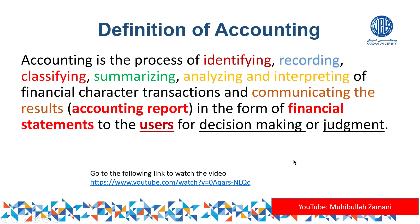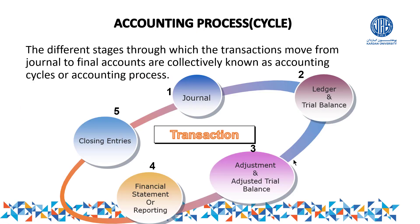So the steps are: identify, record, classify, summarize, analyze and interpret, and communicate to users for decision-making. We do this through the accounting cycle: journal, ledger, trial balance, adjustments, adjusted trial balance, financial statements, reporting, and closing entries.